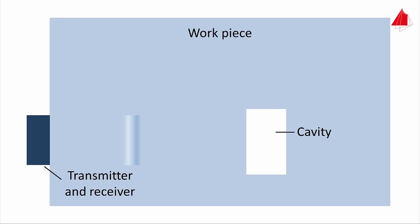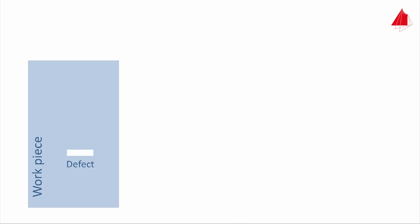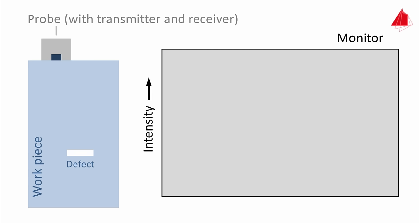For material testing, either the echo of a defect can be utilized—this is the pulse-echo mode—or the phenomenon that hardly any sound waves pass through the imperfection—this is called the through-transmission mode. In pulse-echo mode, a transducer installed in a probe performs both the sending and receiving of the ultrasonic pulse. On a computer monitor, the intensity is plotted upwards on the y-axis and the time towards the right on the x-axis.